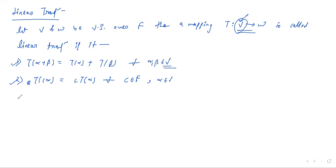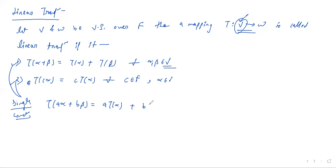We can write these two conditions as a single combined condition: T(aα + bβ) = a·T(α) + b·T(β) for all α, β ∈ V and a, b ∈ F. This is the single condition for checking linear transformation.